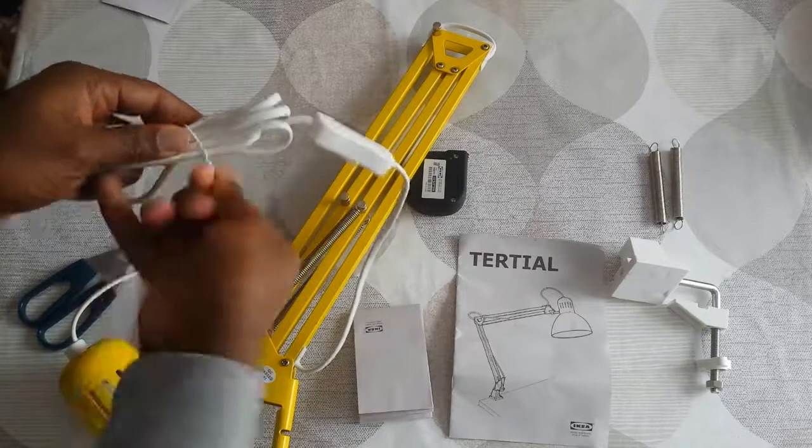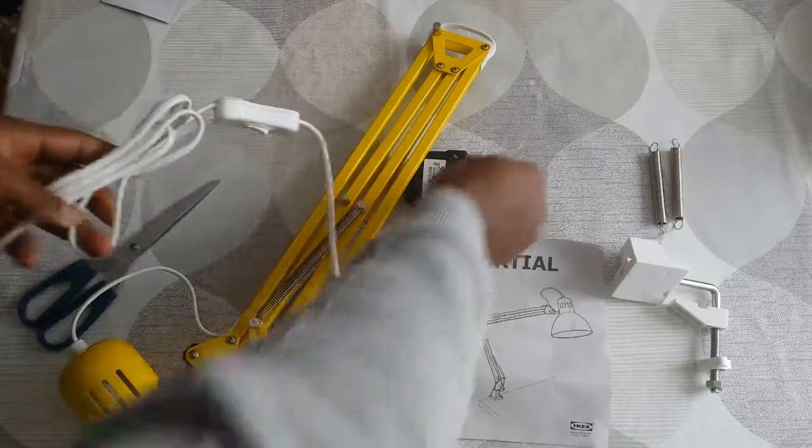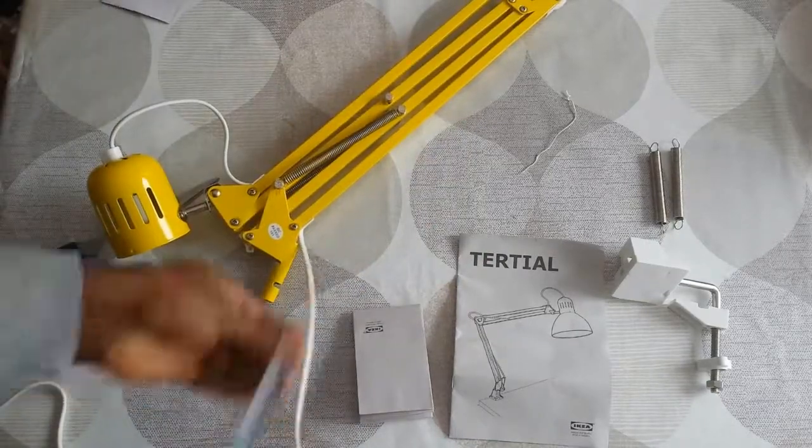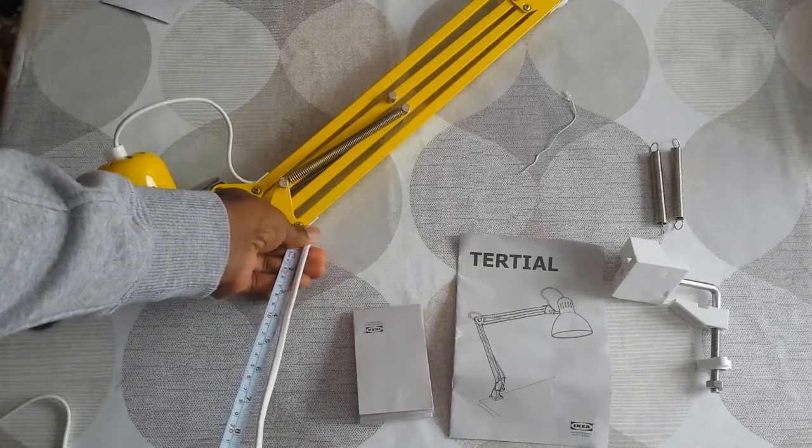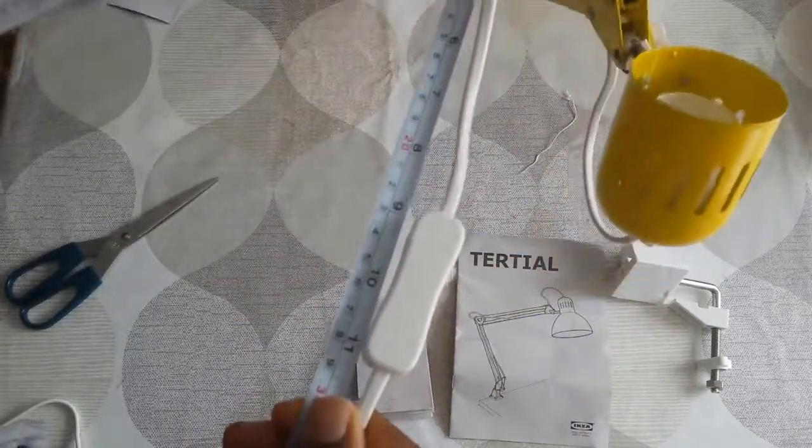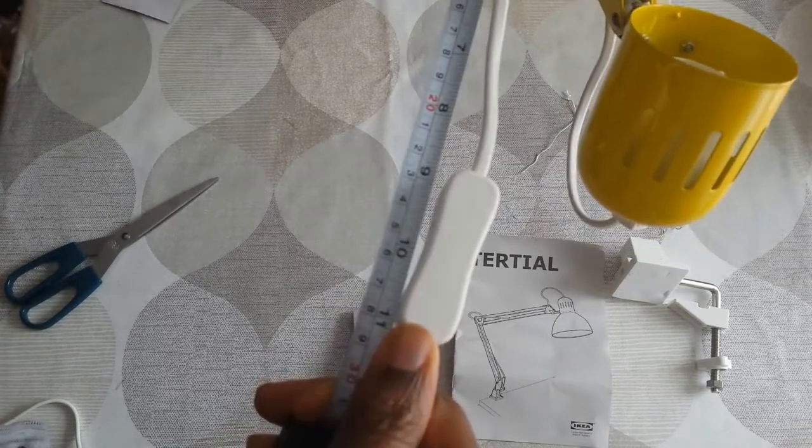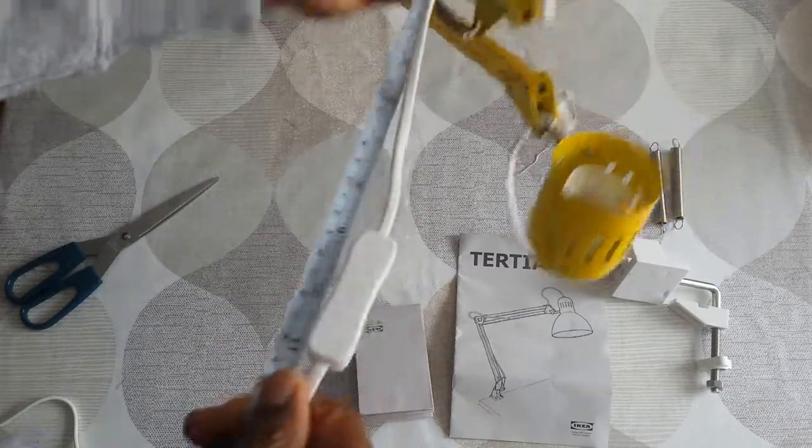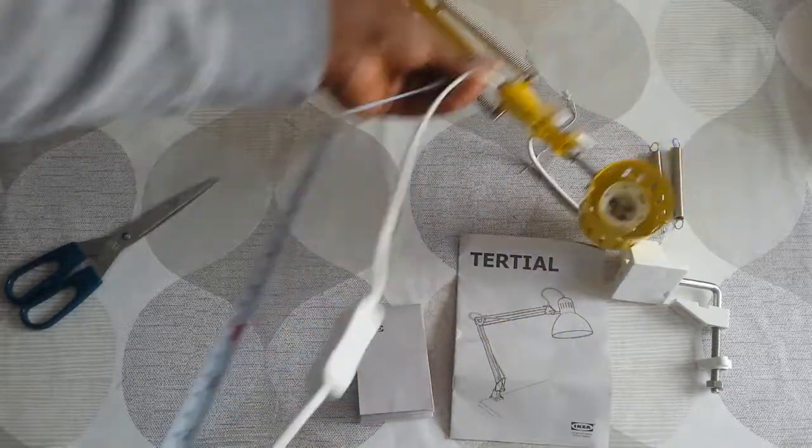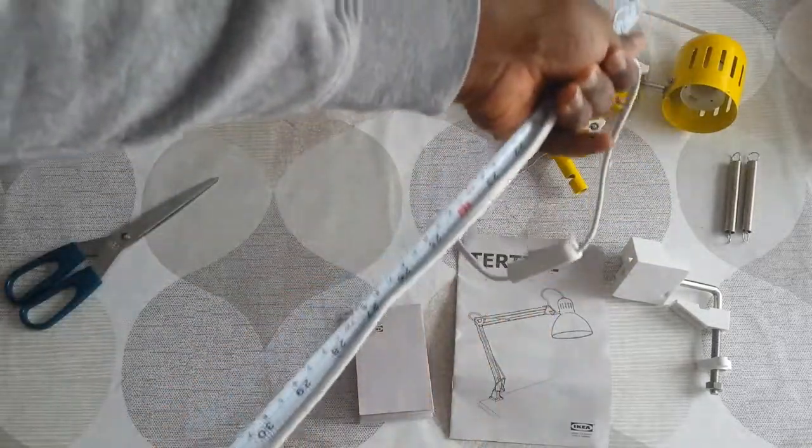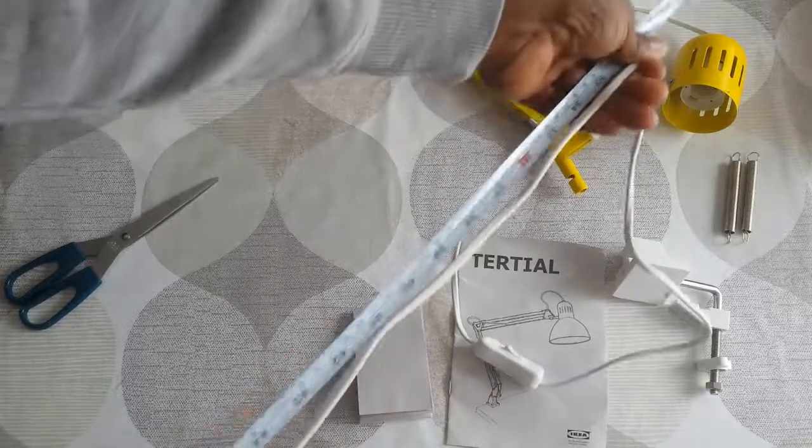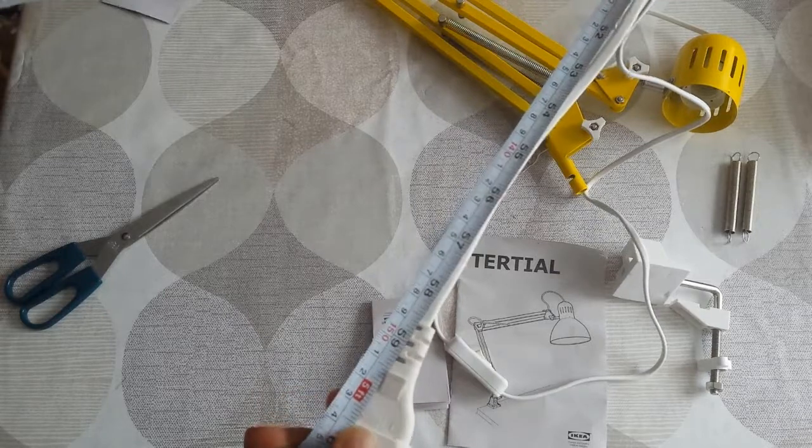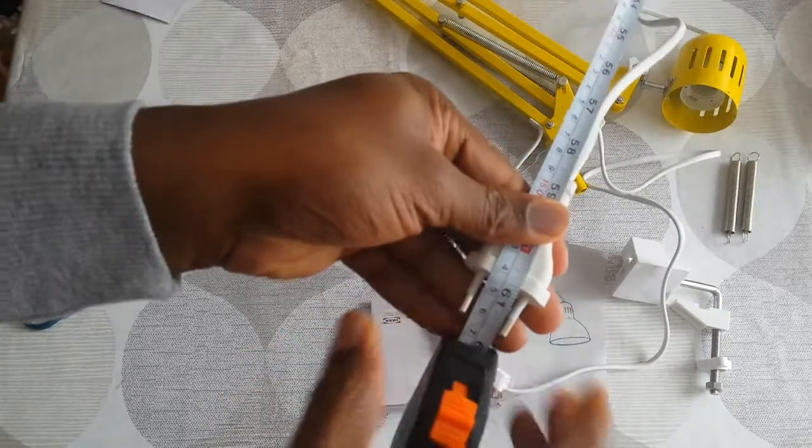So let me get the measurement of the cord for you. In this modern version of the TERTIAL lamp, the switch is now on the cord itself and no longer on the back of the bulb. The switch is at around 26 centimeters, 10 inches point from the base of the lamp. And now to measure the full length of the cord. It's just about 156 centimeters or just around 61 inches. It's a very long and generous cord.